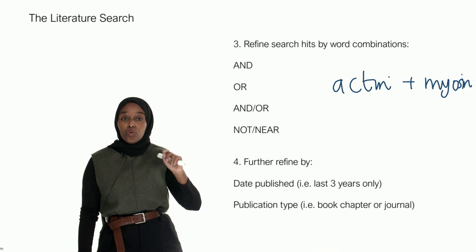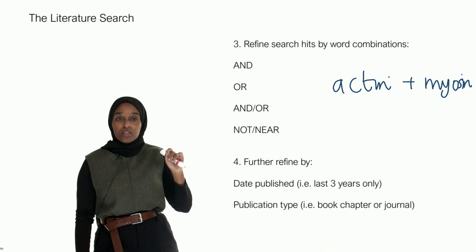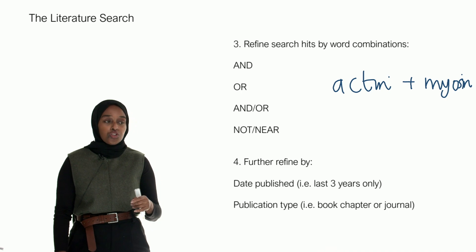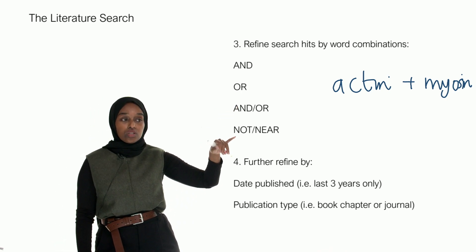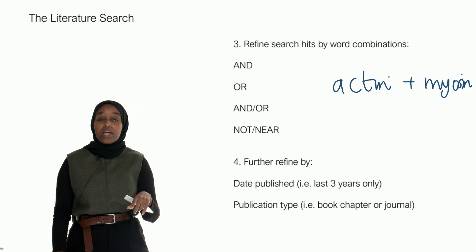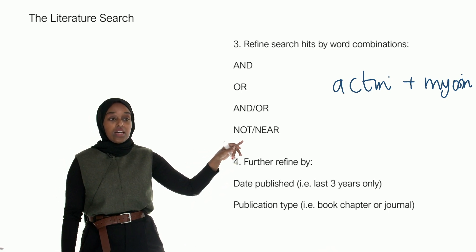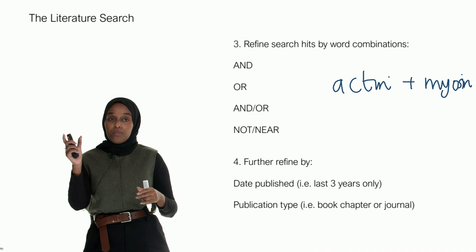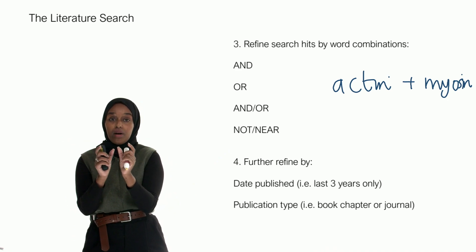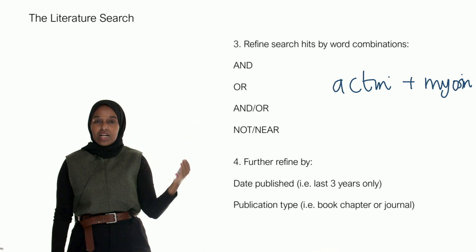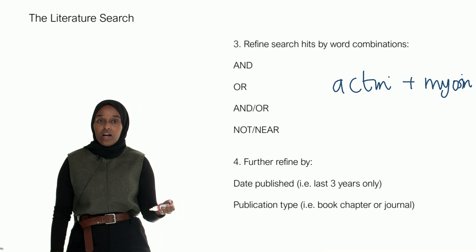You can look for OR, so actin or myosin - look for either one. You can also say NOT or NEAR. So you might say actin not myosin - you don't want a paper that has myosin in it. Or you can say NEAR - a paper that has actin and myosin nearby. So think about your search hits and what exactly you want to find from your literature review.